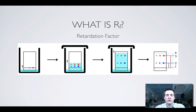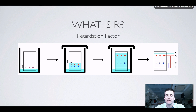Now let's look at what we mean by the retardation factor or RF. As we can see in these diagrams, as well as dipping our thin layer into the solvent, we also put a lid onto it. That's important because as the solvent travels up the thin layer it wants to evaporate off, but we want it to keep moving. The lid means that inside the container there's a high concentration of solvent vapors, which prevents more solvent from escaping and evaporating off the thin layer.